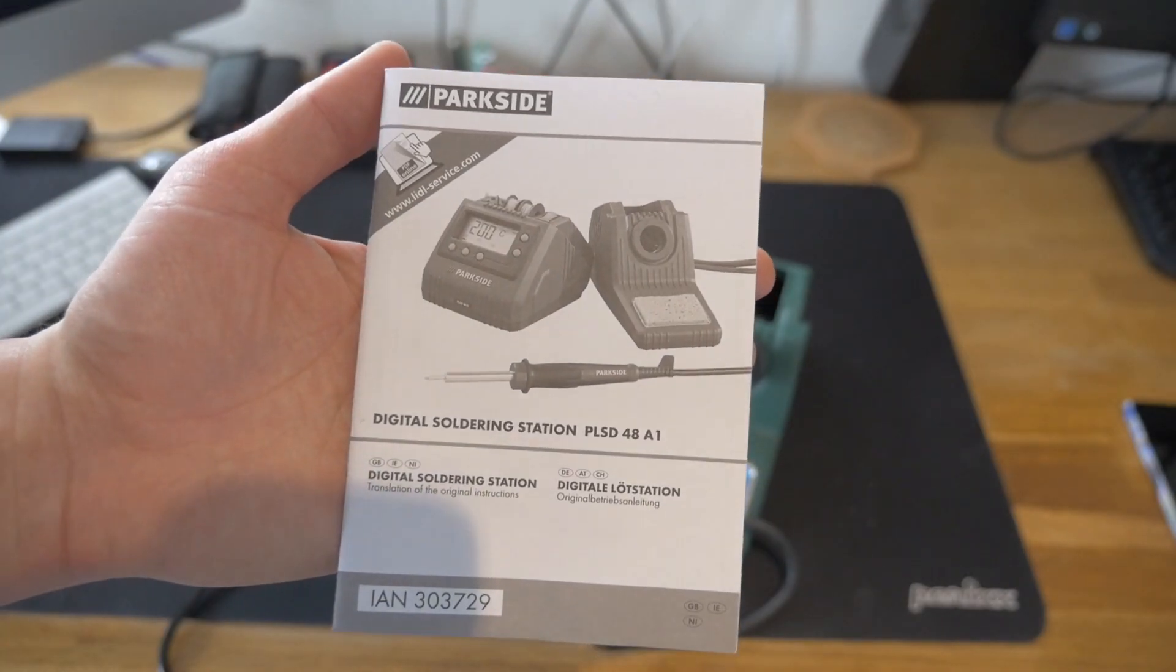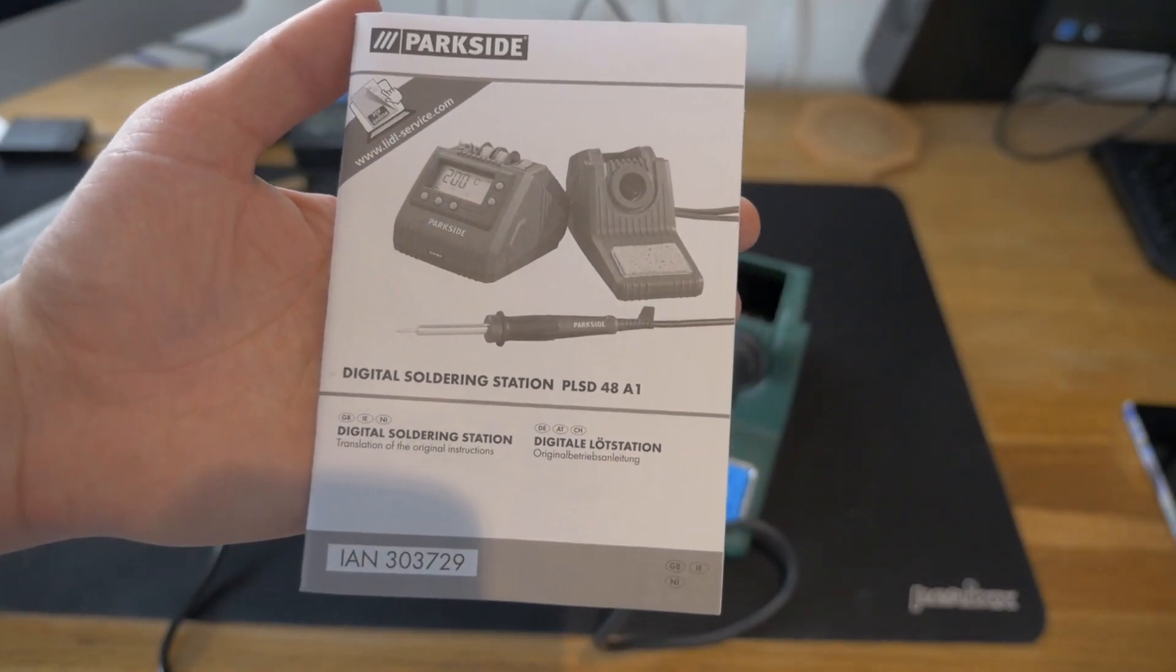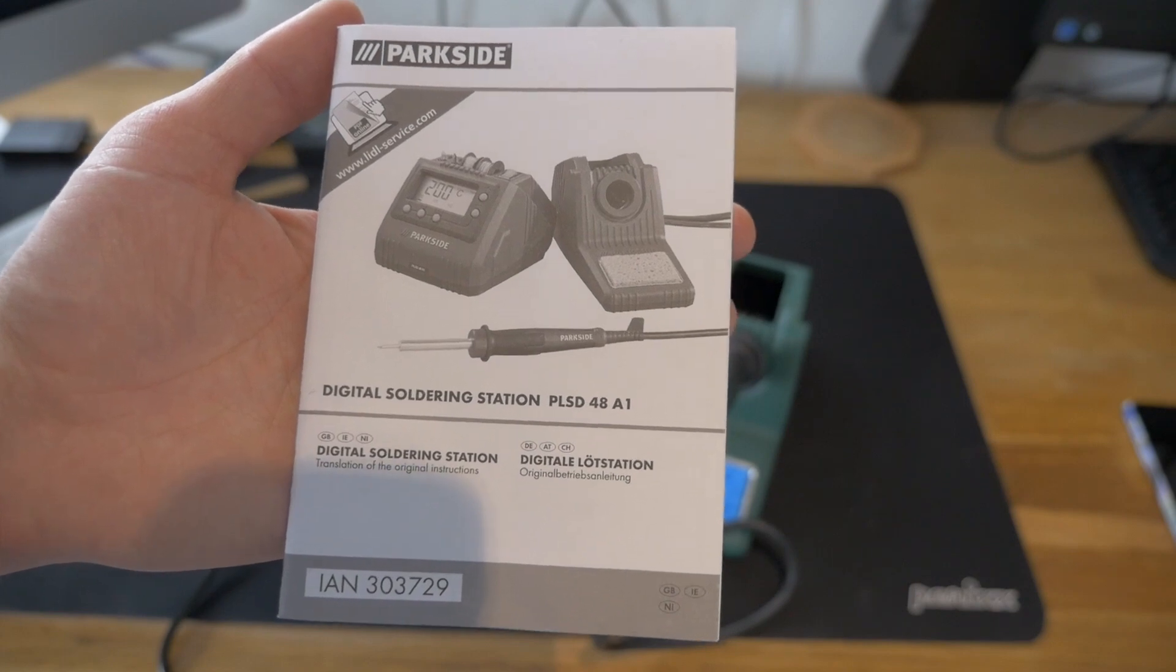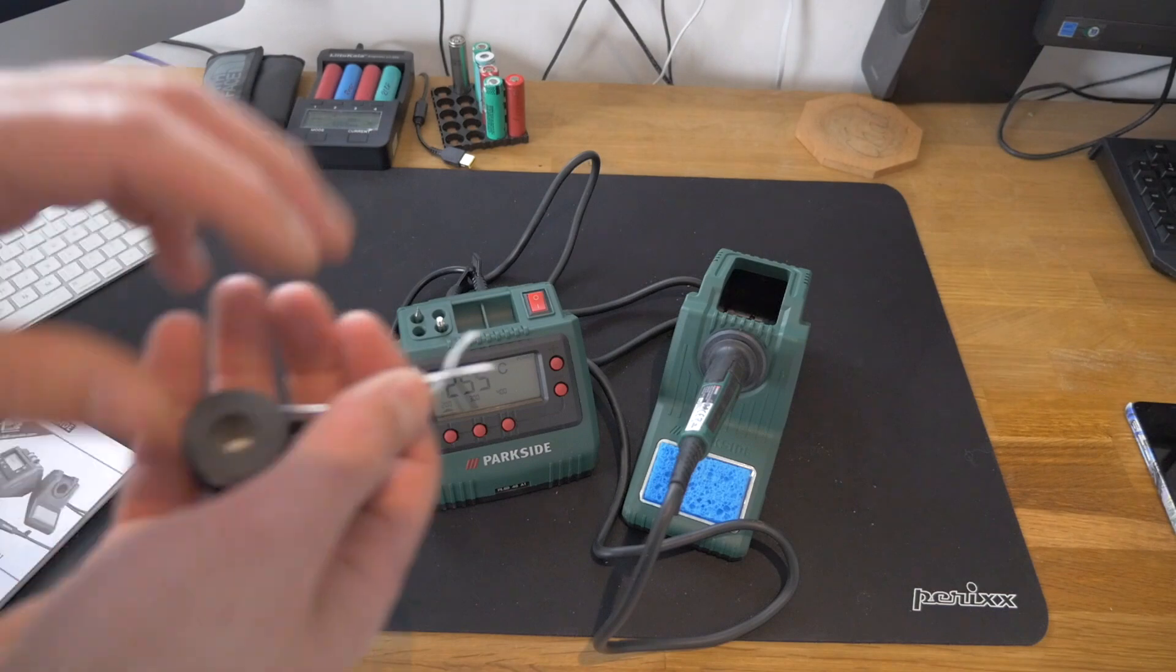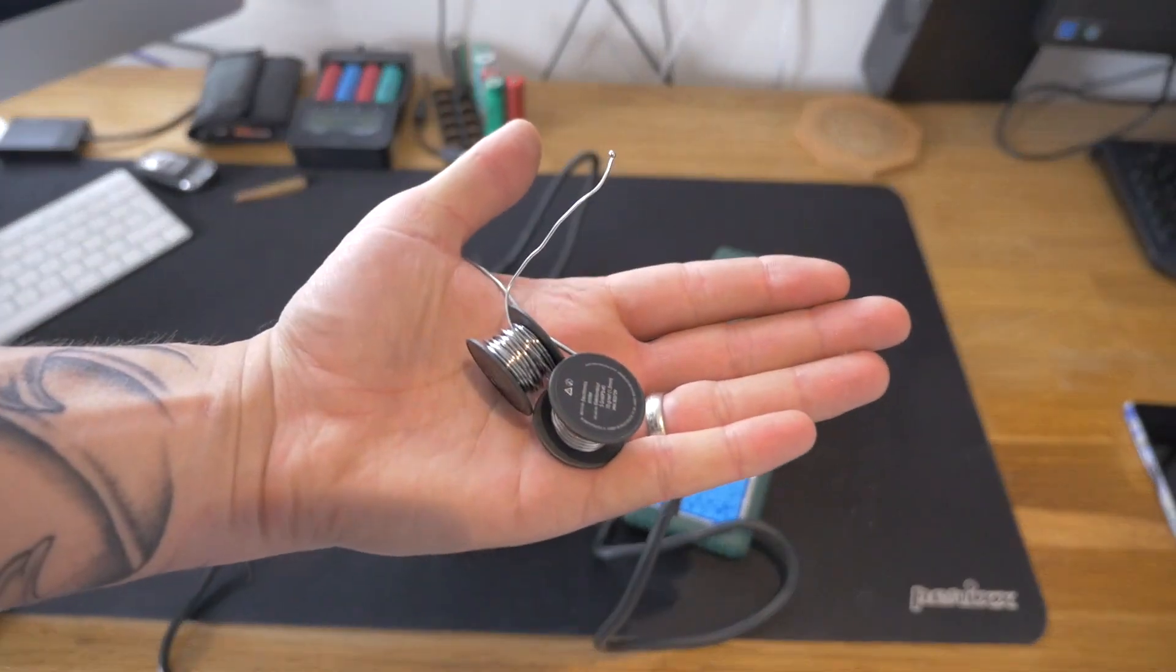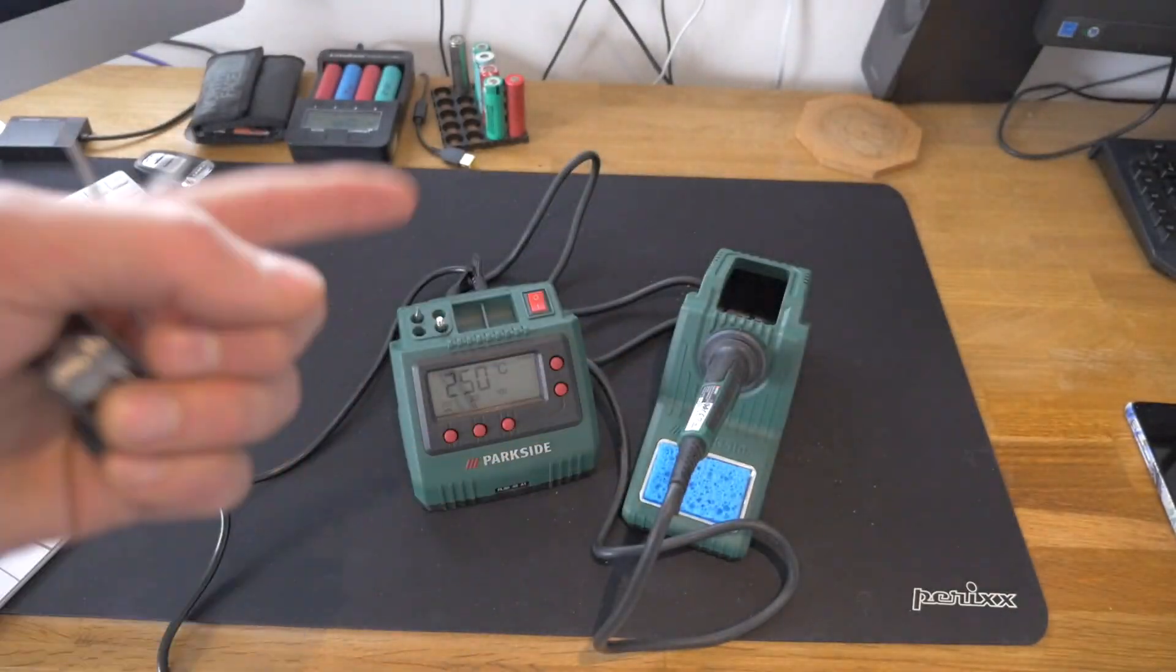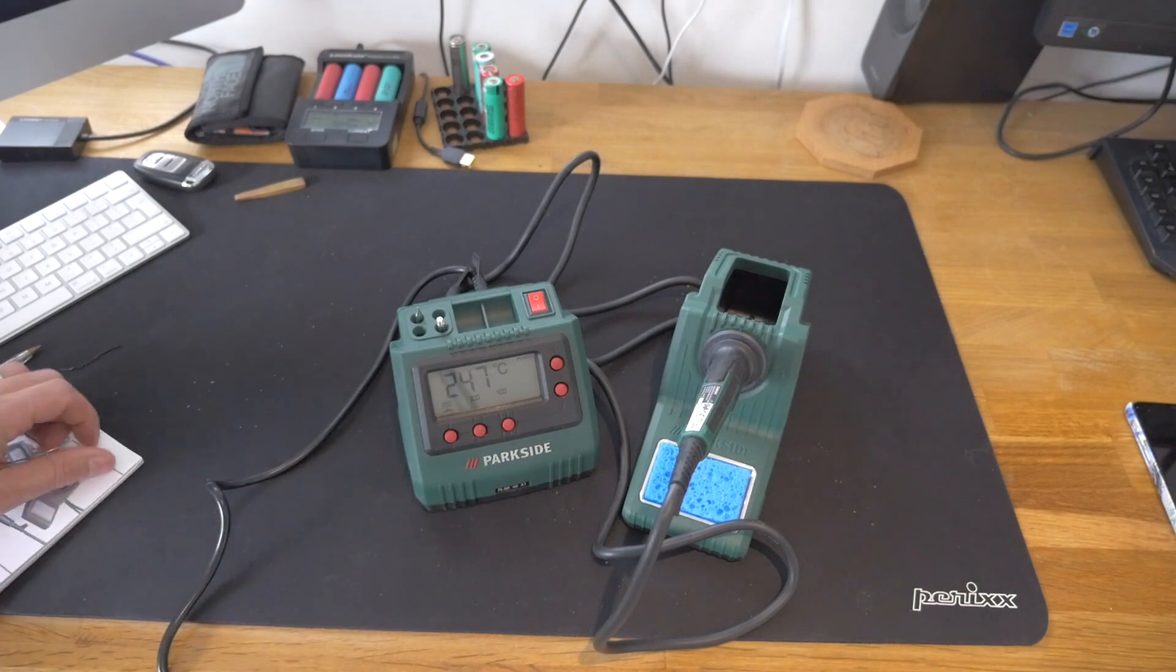So, guys, that's it, really. There's not much to this. The PLSD-48A1 soldering iron. It works, as you saw. You get a couple pieces of solder with it. You get the soldering iron. And we're going to use this for our next video, which is... I'll give you a little preview.